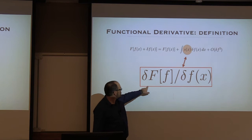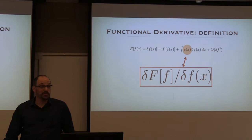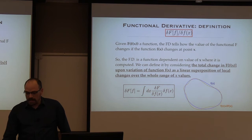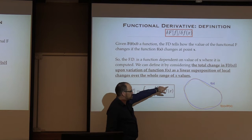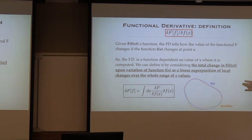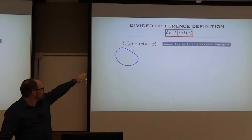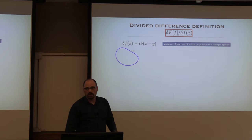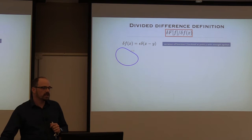Let's do some work. We have the rules. If the functional only depends on n, it's local. If it depends on n prime as well, it's non-local. First example — local functional: calculate the functional derivative of N, the number of electrons, where N equals the integral over all space of n(R) d³R. What is δN/δn?